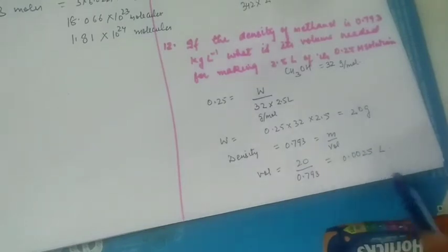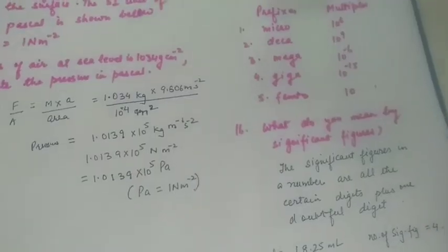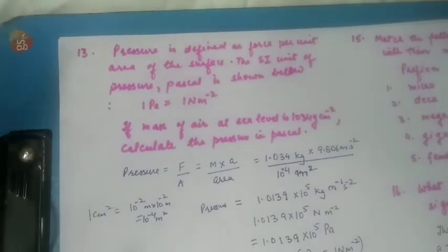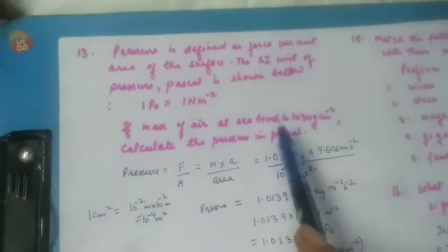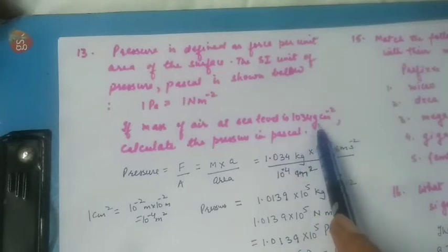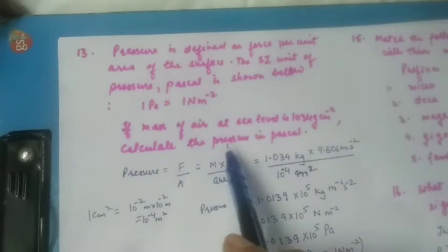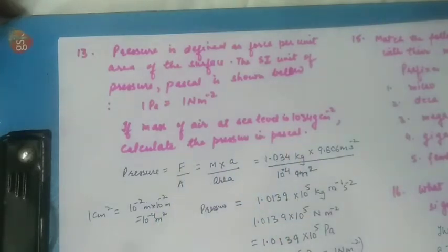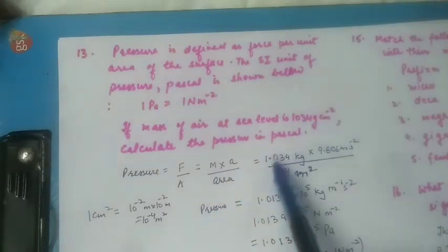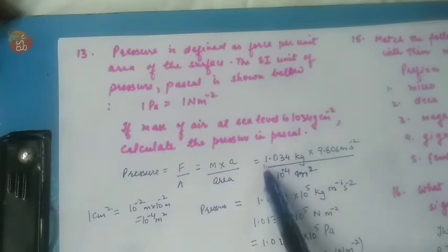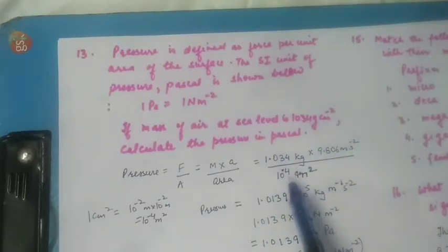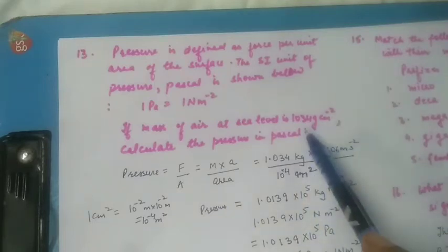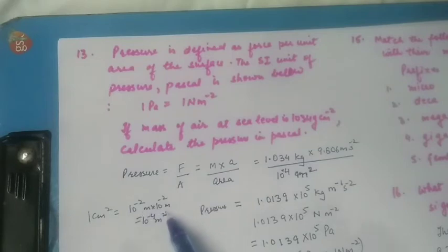Pressure is defined as force per unit area of the surface. The SI unit of pressure is pascal; one pascal is one newton per meter square. If mass of air at sea level is 1034 grams per centimeter square, calculate the pressure in pascal. Pressure = force/area, force = mass × acceleration. Mass = 1034 g = 1.034 kg; area = 1 cm² = 10⁻⁴ m².